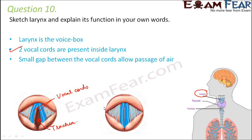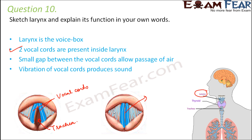When we speak, air is forced into the small gap by the lungs. The vocal cords almost tend to close, so the opening has decreased. Through this small gap, air is forced to pass, causing the vocal cords to vibrate. This vibration of the vocal cords produces sound.